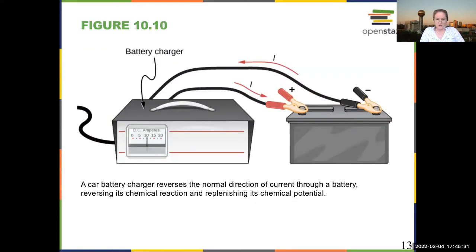A battery charger reverses the normal direction of current through a battery, so it reverses the chemical reaction. Of course, if you charge and discharge a battery over and over again, the reaction is not perfectly reversible all the time. So you will eventually not be able to reverse the reaction enough to get up to the full potential that the battery was designed to carry.